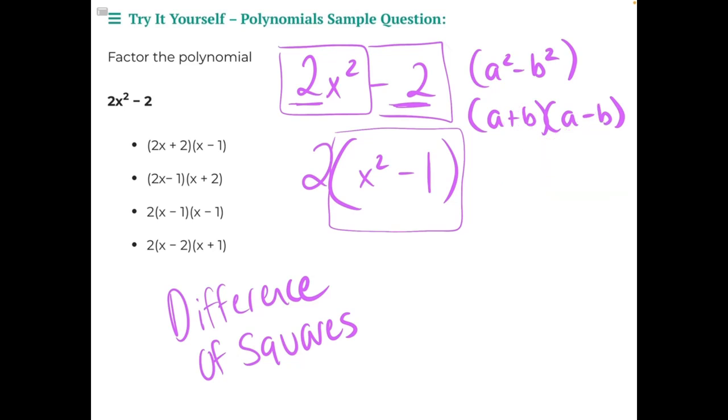So in order to factor this problem here, we need to leave our 2 on the outside of the parentheses, take our a, which is x, a plus b, which is 1, and then multiply it by x minus 1.